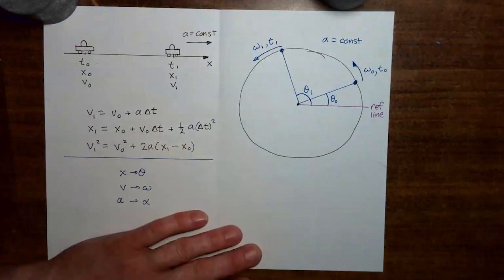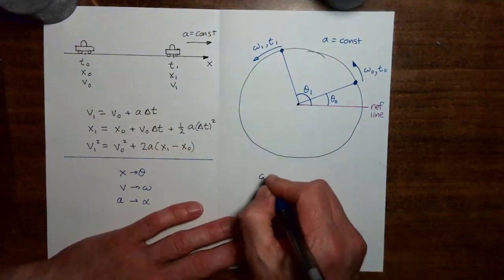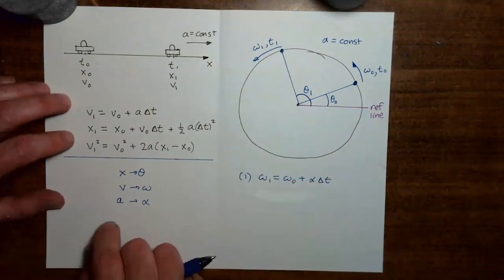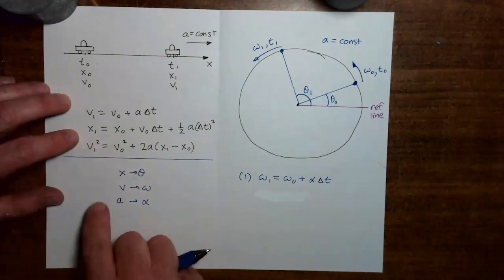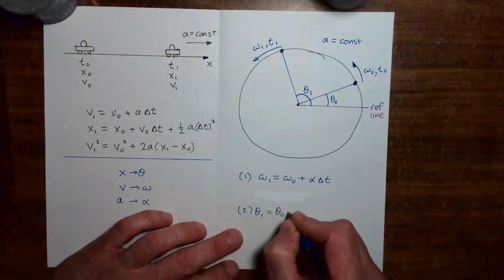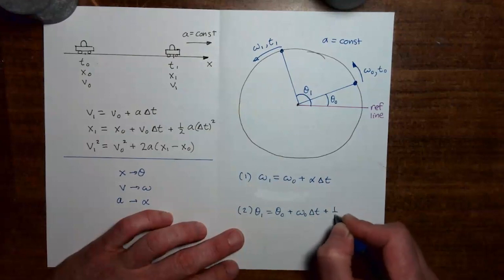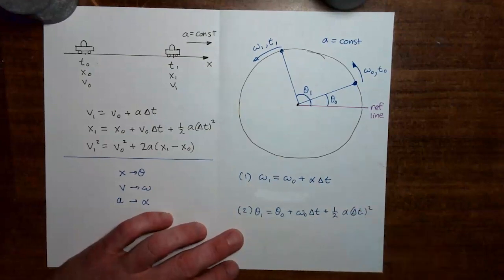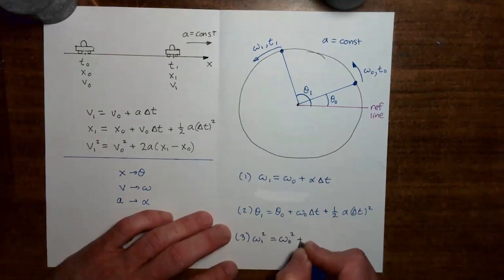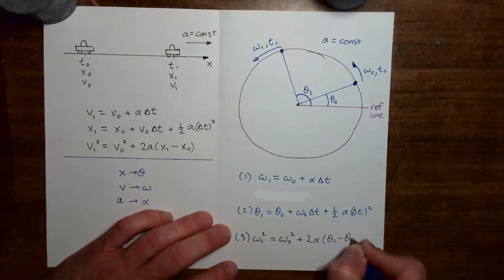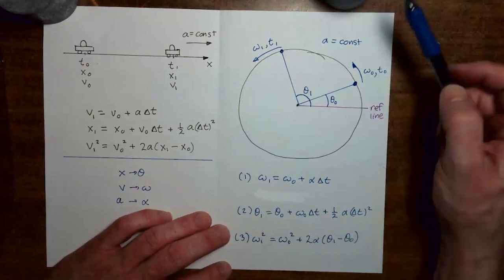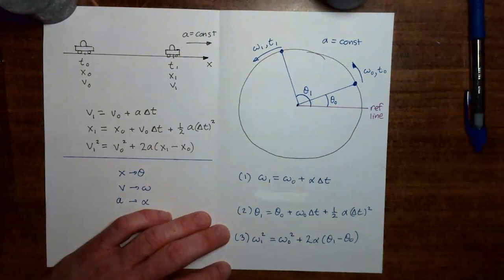Let's apply those substitutions. Taking the first equation and turning the v's into omegas and the a's into alphas, we get: ω₁ = ω₀ + α·Δt — equation one. For the second equation, applying all three substitutions gives: θ₁ = θ₀ + ω₀·Δt + ½·α·Δt². And for the third equation: ω₁² = ω₀² + 2α(θ₁ − θ₀). We now have a set of equations to solve rotational kinematic problems with constant angular acceleration, which we'll apply in the next video.